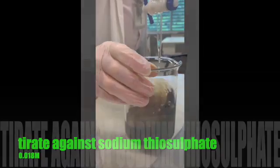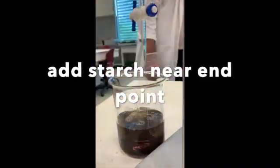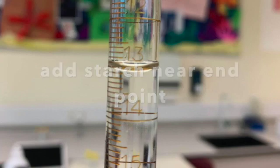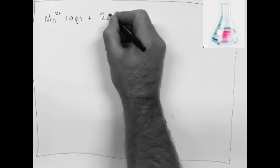Against sodium thiosulfate, concentration 0.018 moles per decimeter cubed. 13.1 cm cubed was our value. So let's have a look at the chemistry.